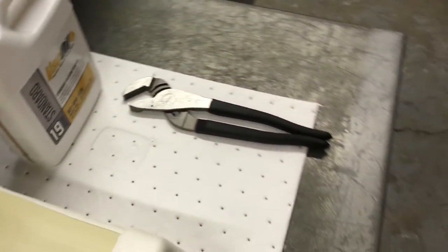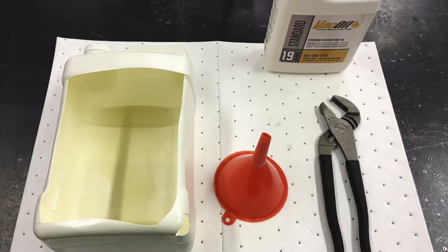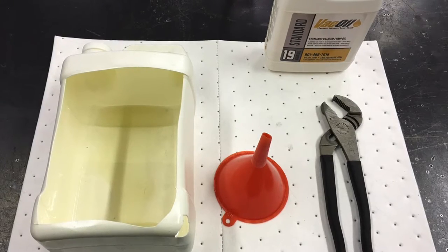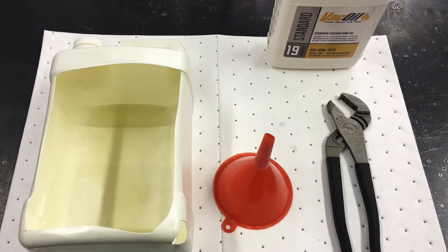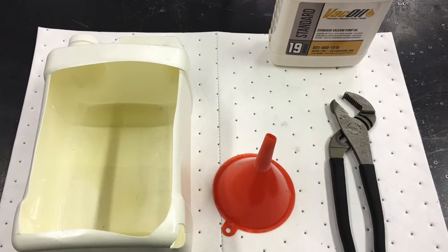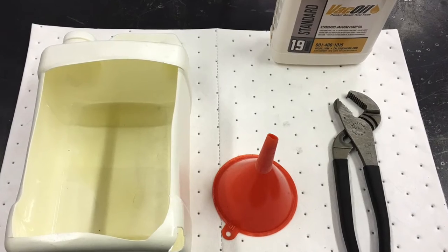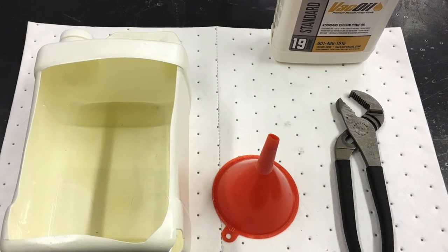To change your oil you will only need a few items. First, an oil pan or any makeshift container to capture the vacuum pump oil, a channel lock wrench, funnel, and some absorbent pads or rags to keep the area clean and to clean parts from old oil.